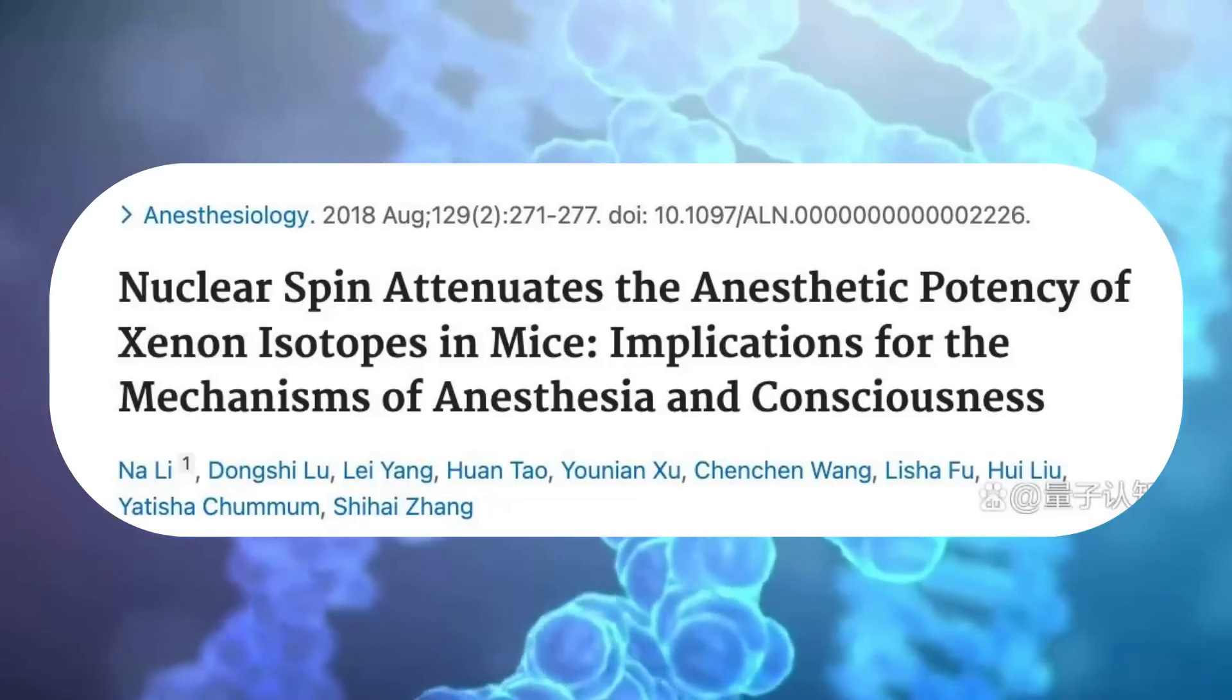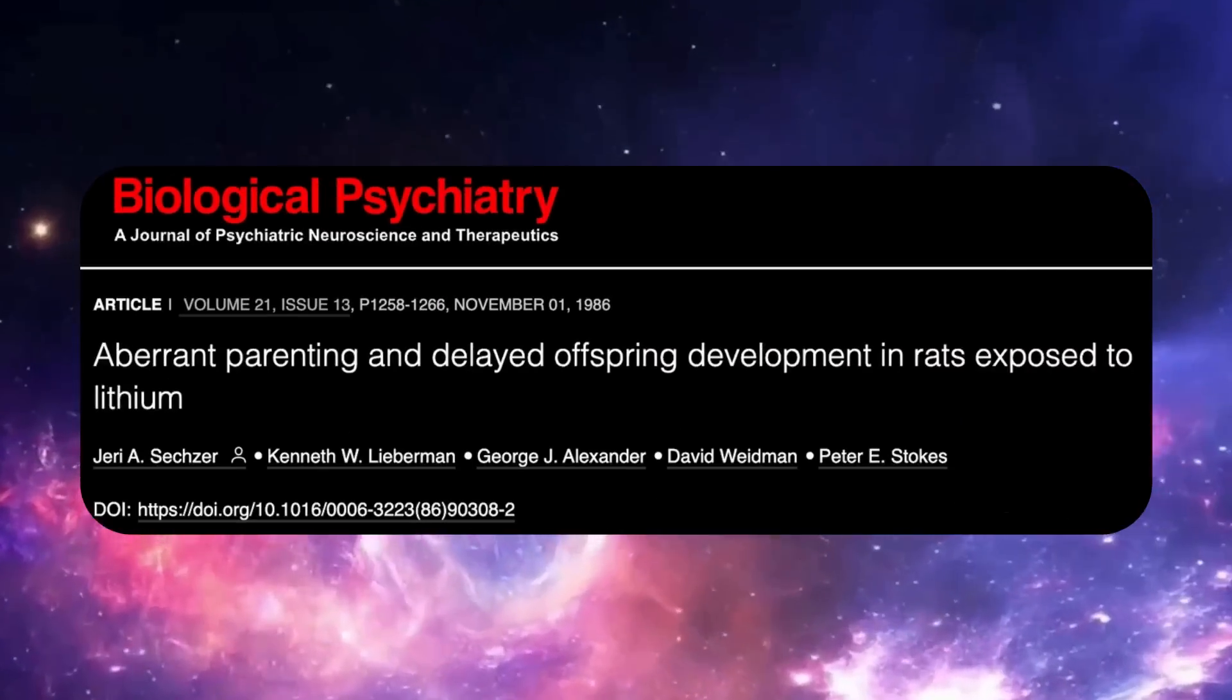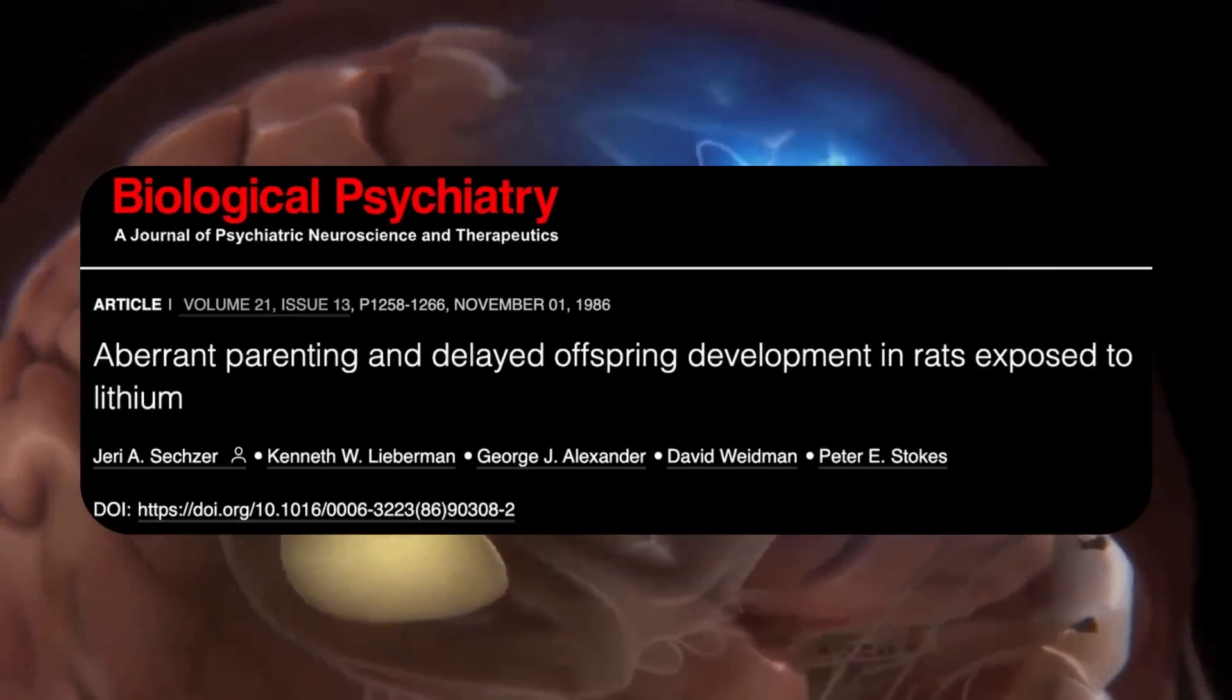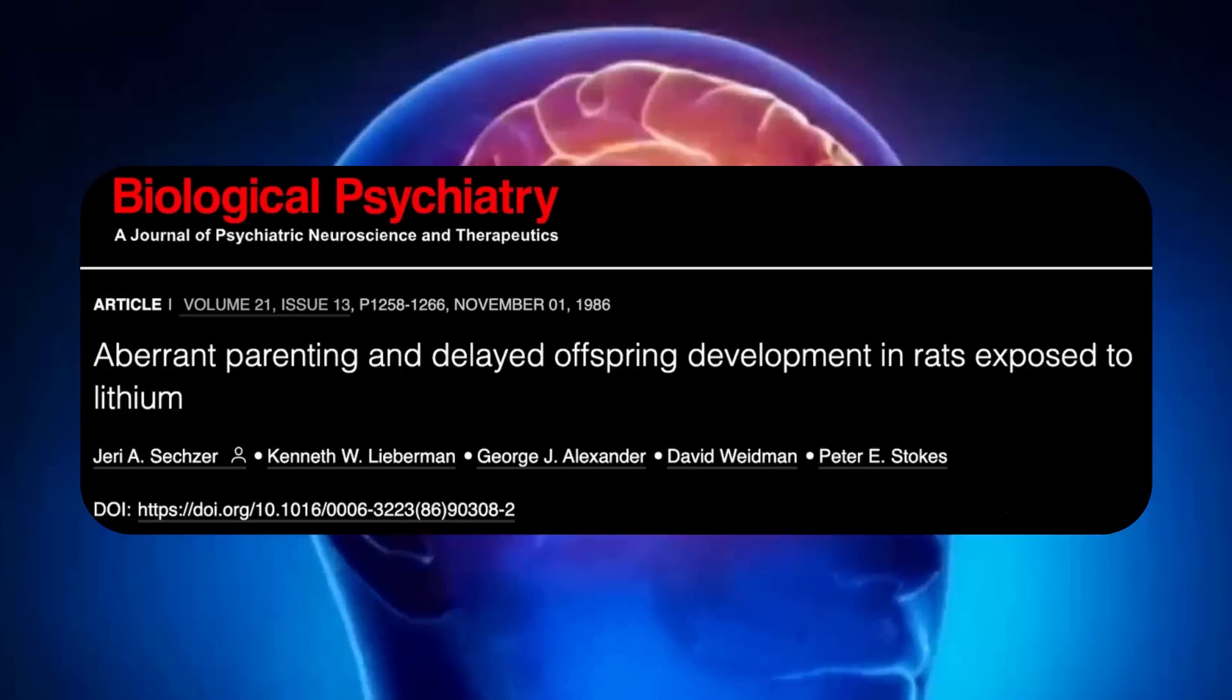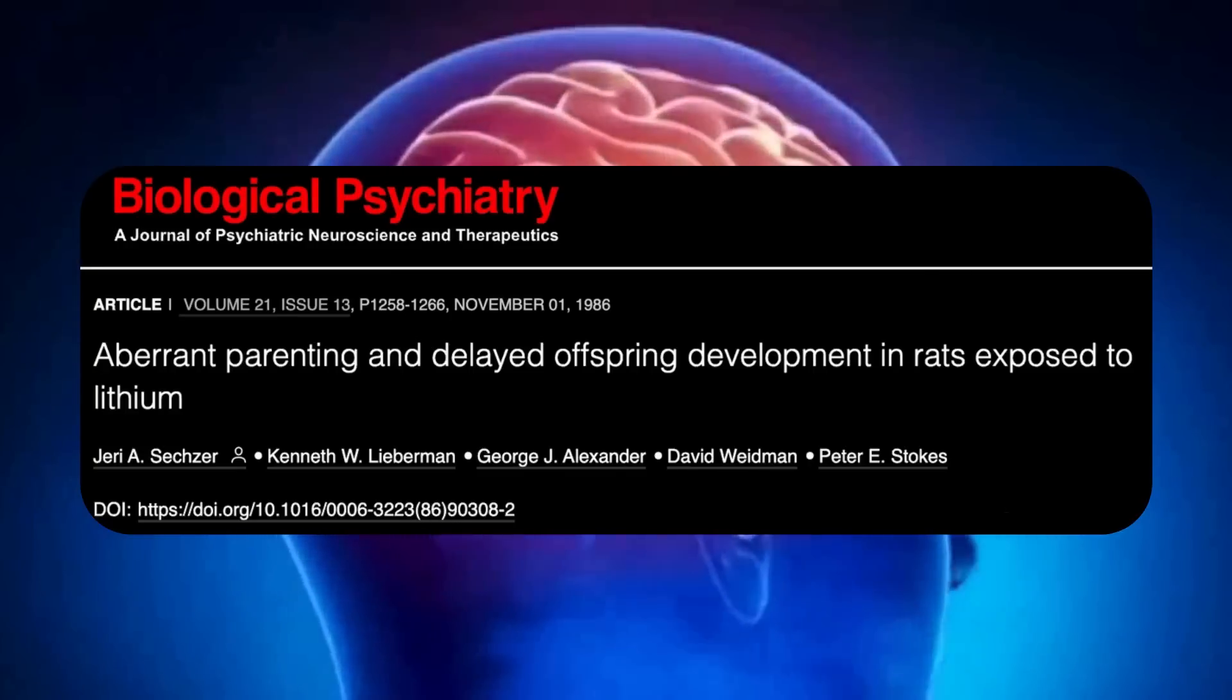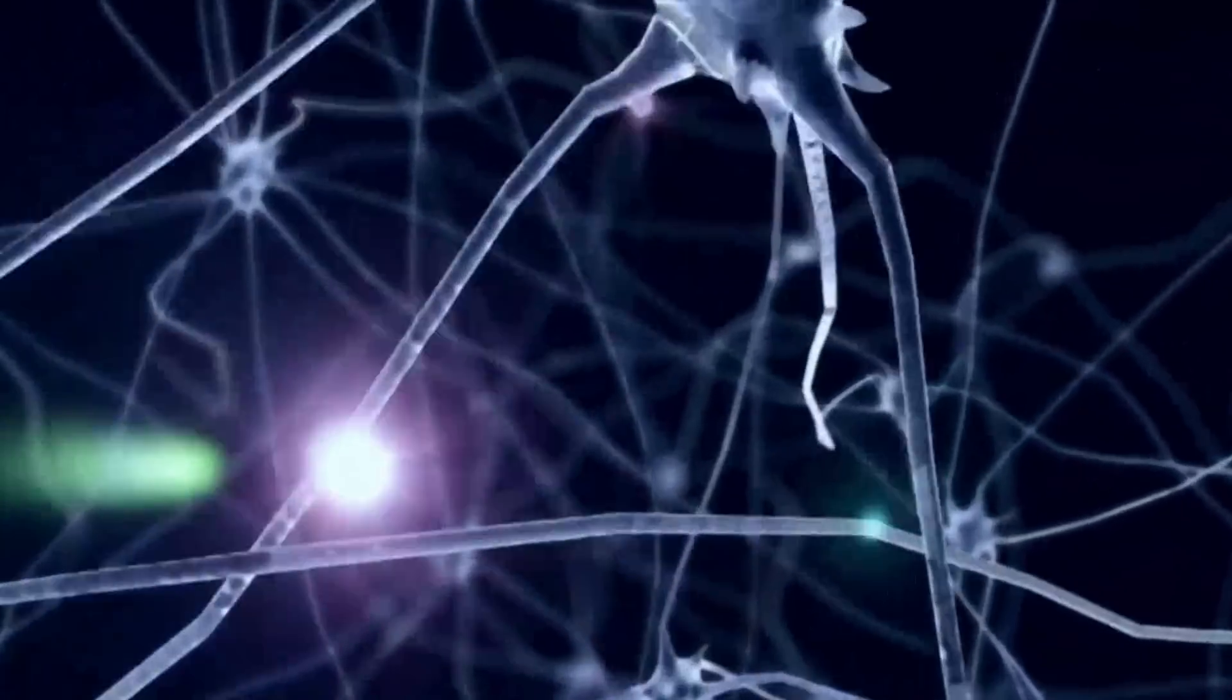In addition, differences in spin among various lithium isotopes can also affect the development and nurturing ability of rats. While these findings are significant, the brain is believed to be a classical system, making its workings difficult to explain.